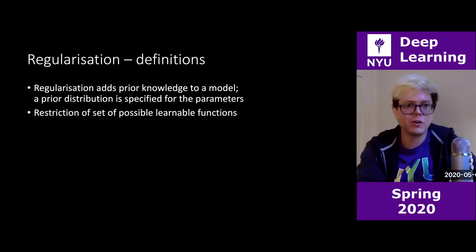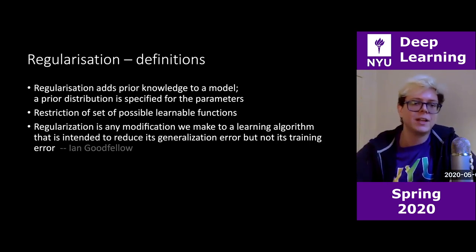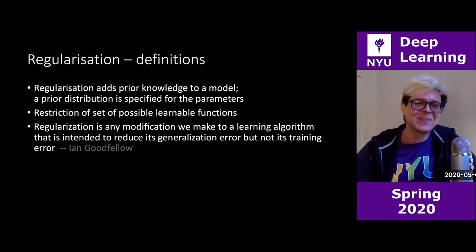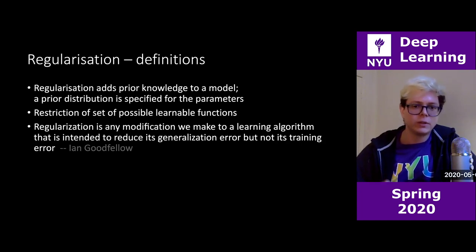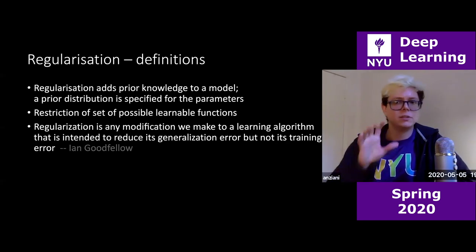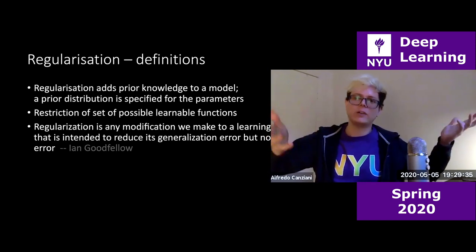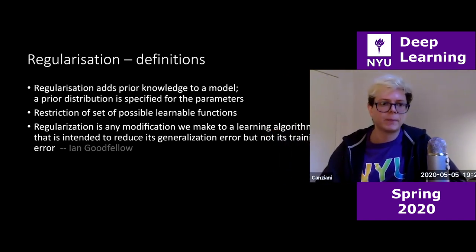Finally, here's the deep learning definition of regularization: it's any modification we make to a learning algorithm that is intended to reduce its generalization error, but not its training error. This is a stretch because it's no longer talking about prior knowledge or functional space, but actual modifications to learning algorithms — more algorithmic implementation. So these are really three different perspectives of the same thing: parameters, functions, and algorithmic implementation.